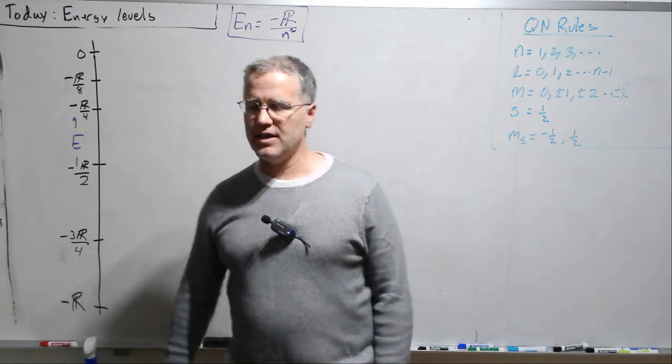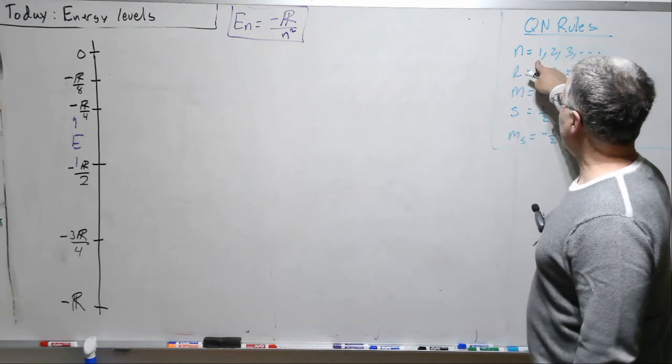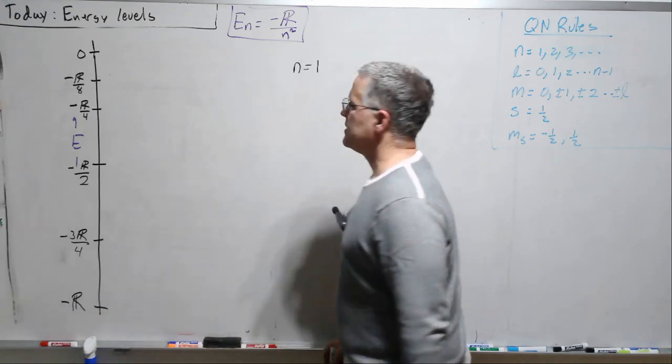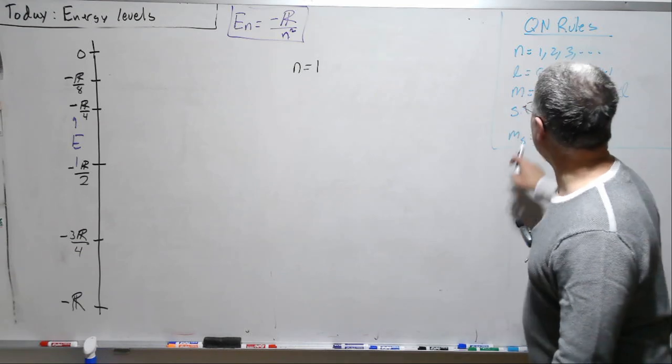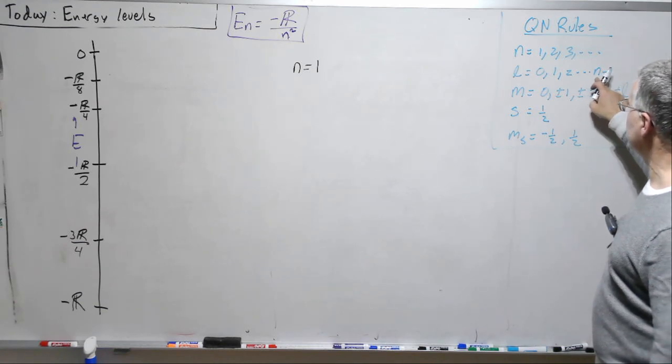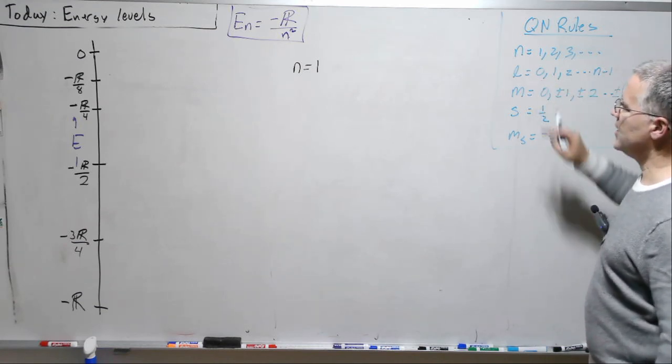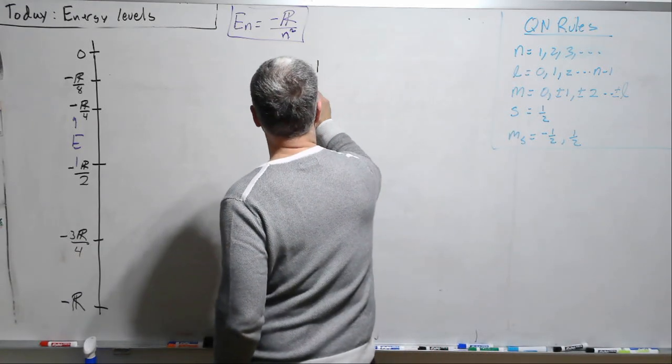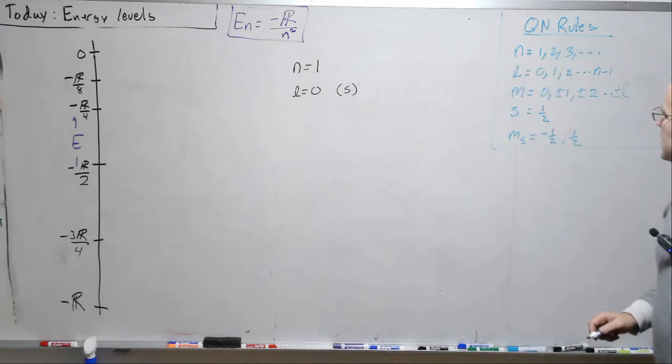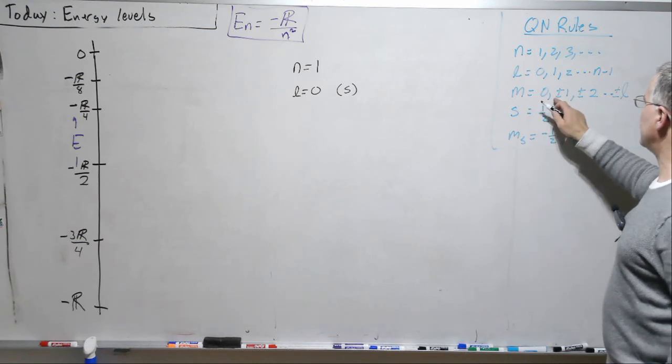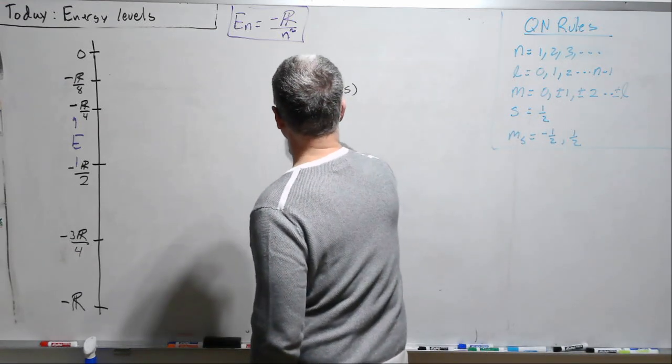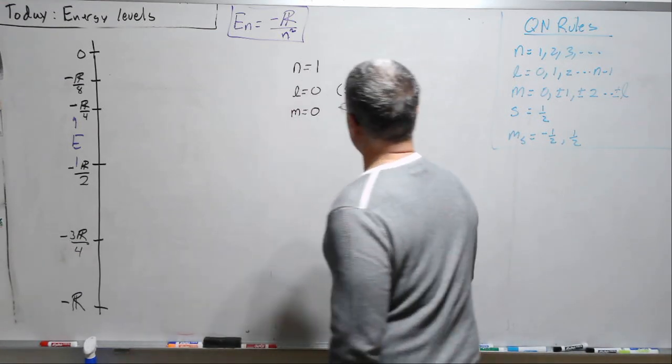Let's go ahead and start with the ground state, so that's going to be where n is 1. So let's take n equals 1 and let's now ask ourselves what can L be? Well L can be 0 up to n minus 1, and n is 1, so 1 minus 1 is 0, so L can only be 0. And remember when L is 0 we call that an S subshell. Now L is 0 and m can be 0 plus or minus 1 up to plus or minus L, but L is 0 so m has to be 0.